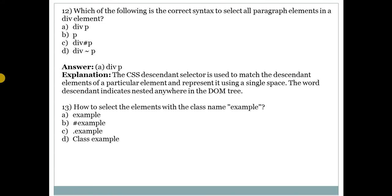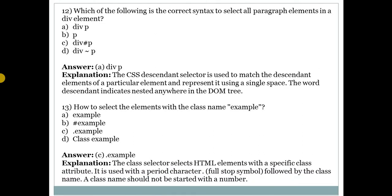Next question: how to select elements with the class name 'example'? Answer is C — .example. The class selector selects HTML elements with a specific class attribute. It is used with a period (dot/full stop) followed by the class name. A class name should not start with a number.